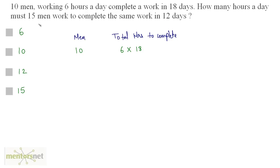Next, we have 15 men who work for 12 days, so that is times 12, and we have been asked how many hours per day these men work — let it be x. We need to determine whether the relation is proportional or inversely proportional. If you increase the number of men, the total hours to complete will decrease, so this is inversely proportional.